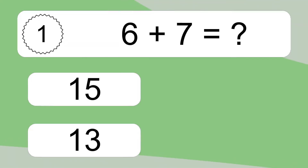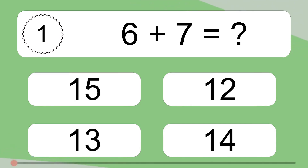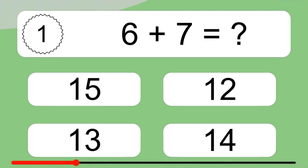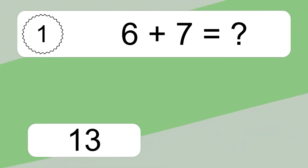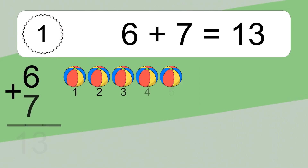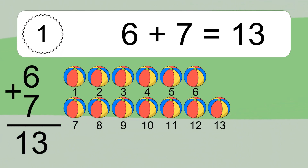6 plus 7 equals what? 6 plus 7 equals 13. Let's count it.